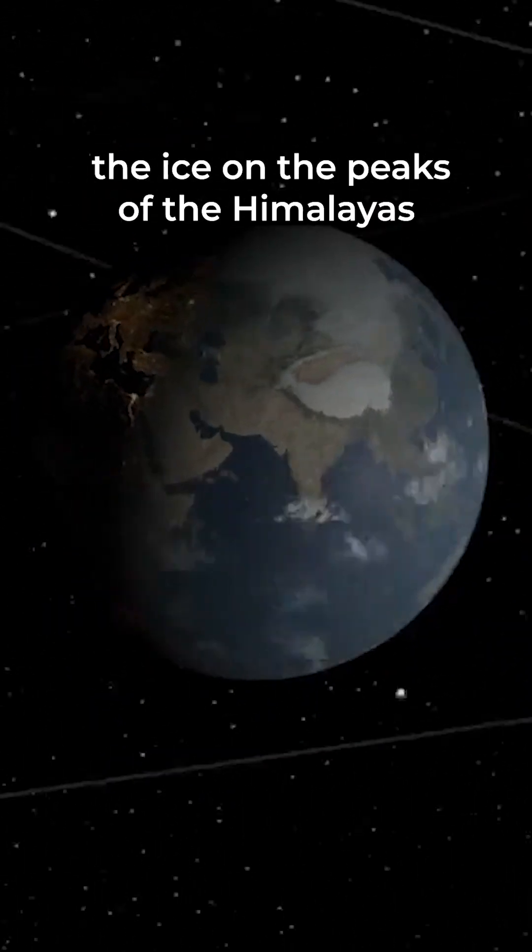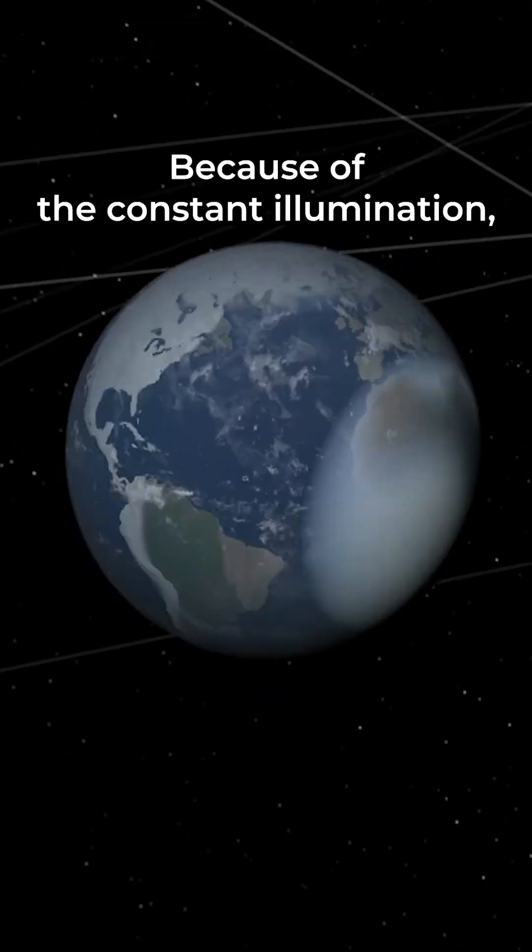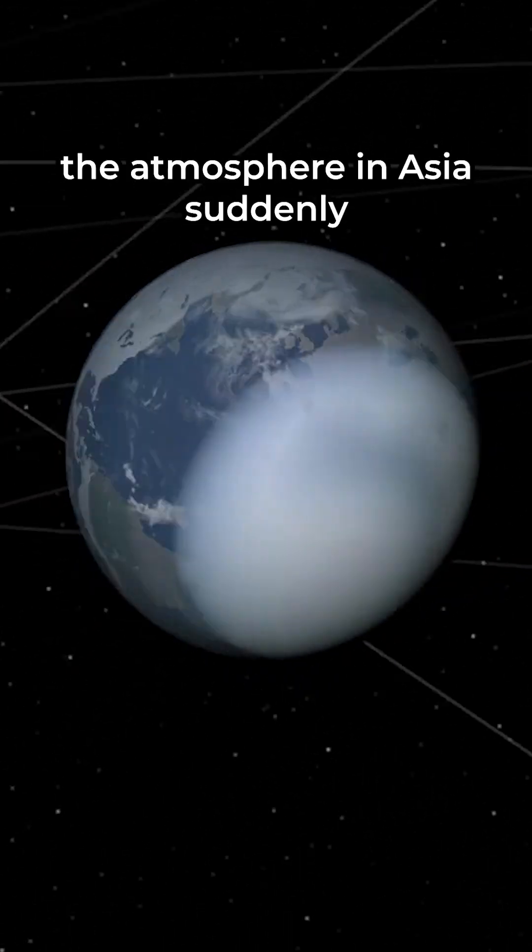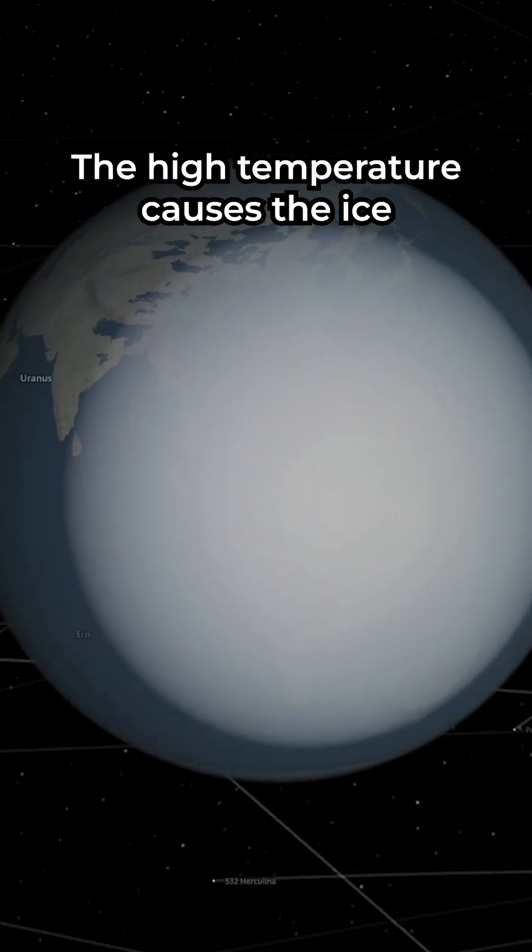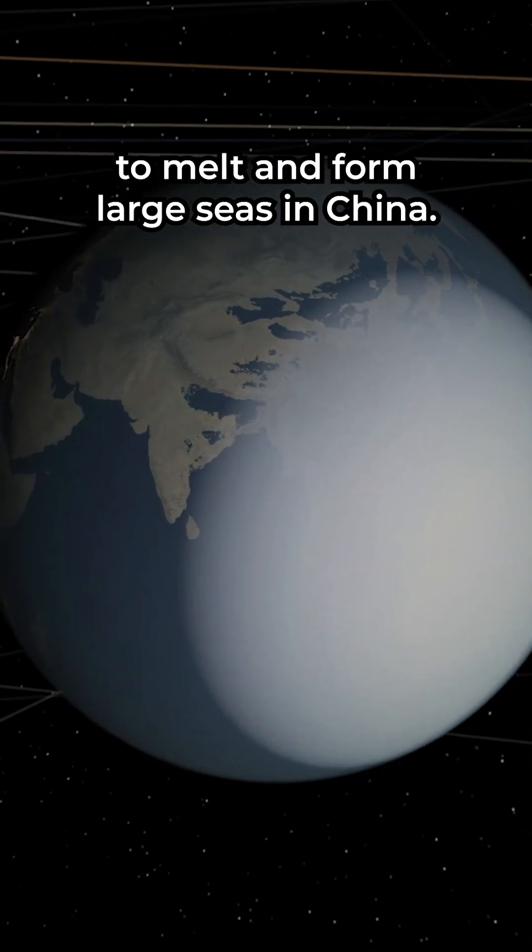Immediately, the ice on the peaks of the Himalayas will melt rapidly. Because of the constant illumination, the atmosphere in Asia suddenly becomes much denser. The high temperature causes the ice to melt and form large seas in China.